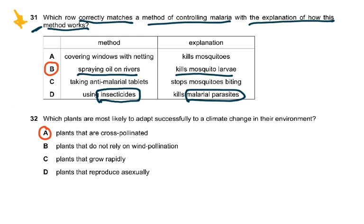Question 32: which plants are most likely to adapt successfully to a climate change? Plants that are cross-pollinated, because there is a lot of variation in them and they may be better adapted. Cross-pollination results in variation, which leads to later organisms being better adapted to a changed environment.